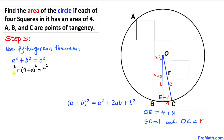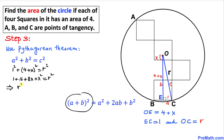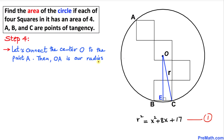Let's simplify. One squared is one. Expanding (4 plus x) squared using a plus b squared equals a squared plus 2ab plus b squared gives us 16 plus 8x plus x squared. So we get: r squared equals x squared plus 8x plus 17. I'll call this Equation 1.